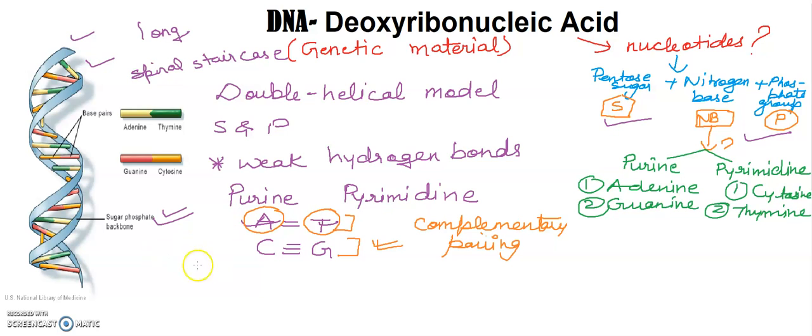And for a complete turn, it takes complete turn after 34 angstroms. You can write here. And there are 10 base pairs in a complete turn. In a complete turn there are 10 staircases. You can see here: 1, 2, 3, 4, 5, 6, 7, 8, 9 and this one is 10. So one round contains 10 base pairs.